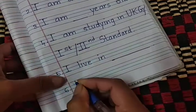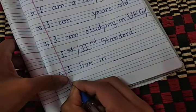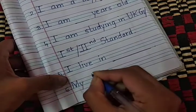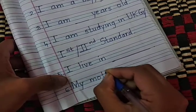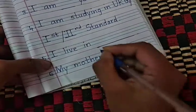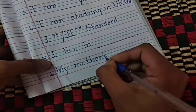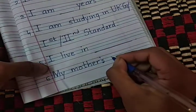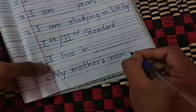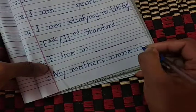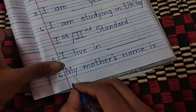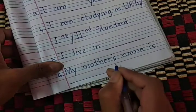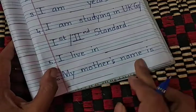The sixth sentence is your mother's name. Write M capital, Y small — 'my' — give a finger space, then 'mother's': M-O-T-H-E-R apostrophe S, give a finger space, then N-A-M-E all in small, give a space, then I-S. My mother's name is dash — write your mother's name in the blank.